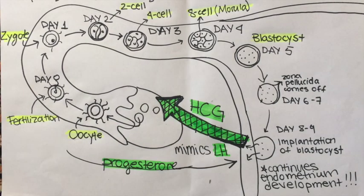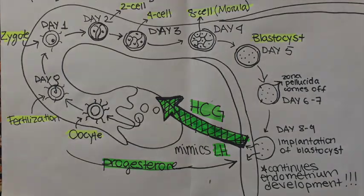To summarize, there are several steps to the development of the egg. It is first an oocyte which is fertilized to become a zygote, and then undergoes a process of division to become an eight-cell morula, which then becomes a blastocyst and is implanted into the endometrium. The hormone HCG is very important to the process of conception because it allows the endometrium to continue growing and not shed like it would in a normal menstrual cycle.